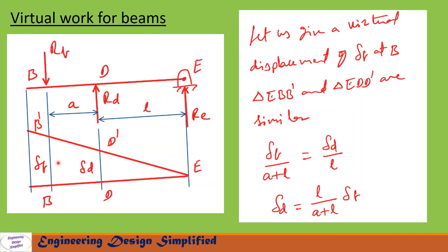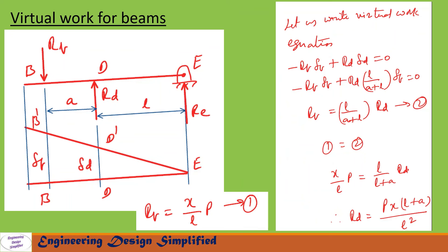From the two similar triangles E-D-D′ and E-B-B′, we can write delta_B / (A + L) = delta_D / L. From this equation, delta_D = L / (A + L) · delta_B.